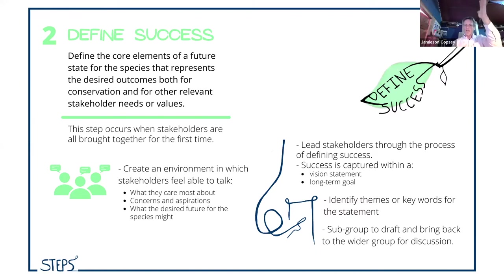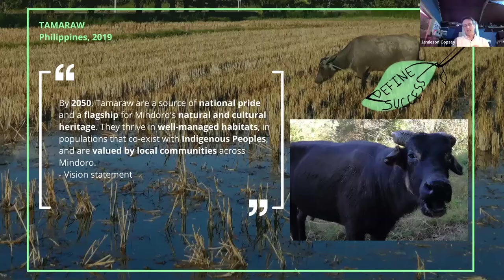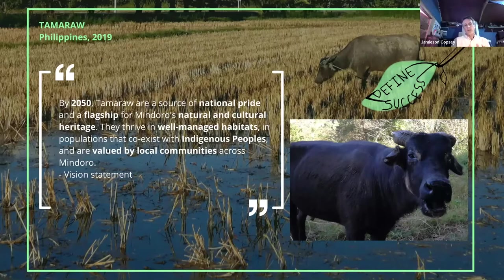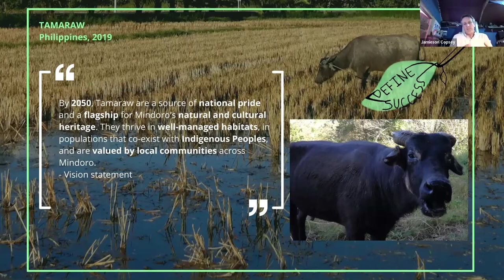This shared definition gives direction — a bit like the North Star for mariners. Here's an example with the tamarau in the Philippines, where the process involved indigenous groups, conservationists, and governments. There were long conversations around specific words — 'coexisting' versus 'living alongside' — and ensuring translations carried the same meaning across languages. This took a while to develop, but allowed the group to clarify the direction they were all aiming for with the species.